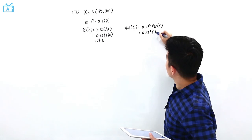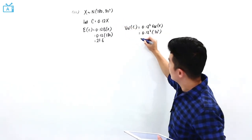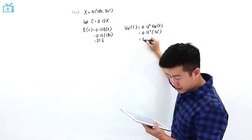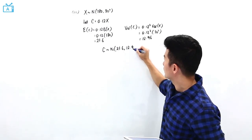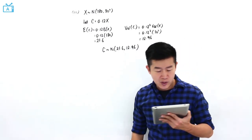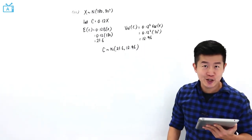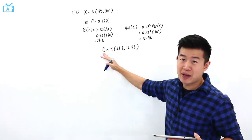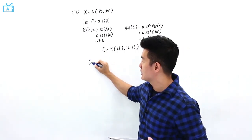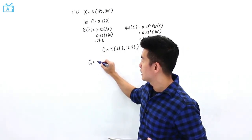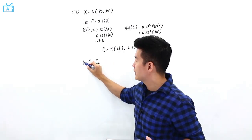For the variance of C, it is 0.12 squared times the variance of X. The variance of X is 30 squared, so this is 0.12 squared times 30 squared, which equals 12.96. This means that C follows a normal distribution with mean 21.6 and variance 12.96.